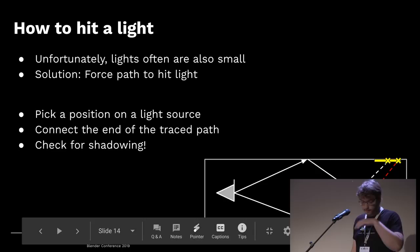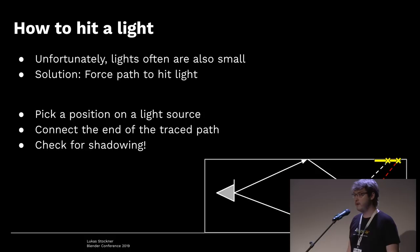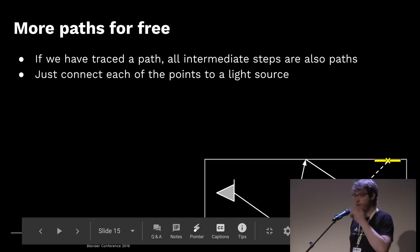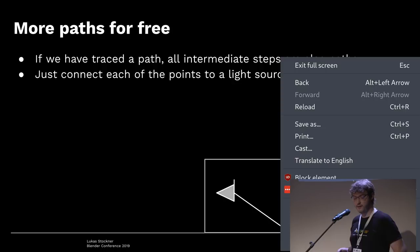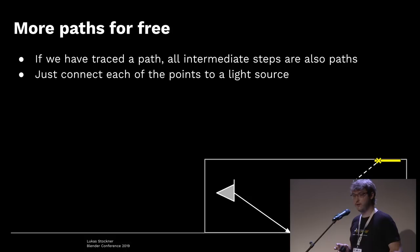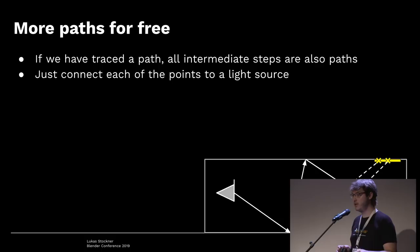We need more light paths without a lot more computation. It turns out if we have a full path, all intermediate results are also valid paths. For example, once we have a path that bounces a few times and connects to the light, we can look at the first bounce and connect that — that's also a valid path. We can keep doing this at each bounce, generating many light paths from just one trace.